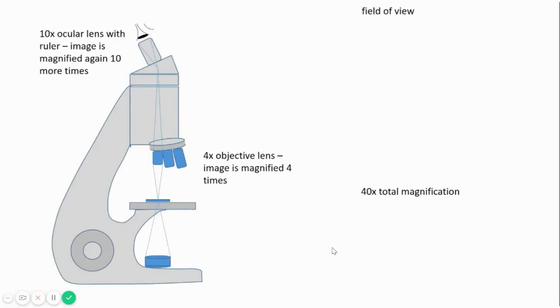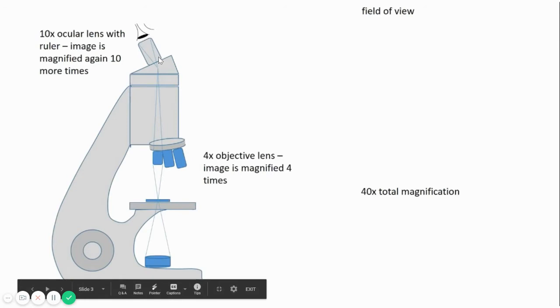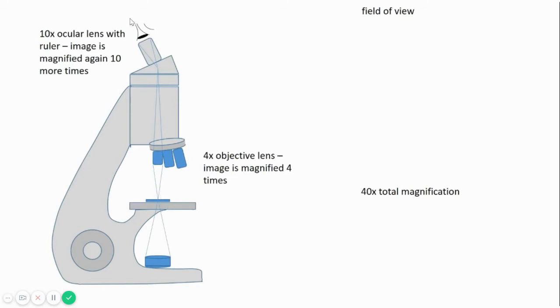Again, reminding you of the setup: we have the 10x ocular lens or the eyepiece lens, then we have the 4x objective lens focused on our specimen. So the total magnification in which we are going to view our specimen is 40 times. Let's see how our field of view will look. Field of view means when you put your eye focused on the eyepiece lens, what will you see.